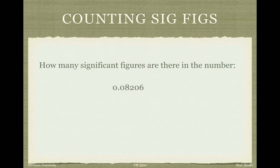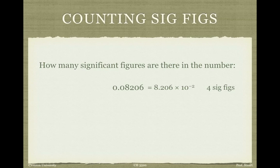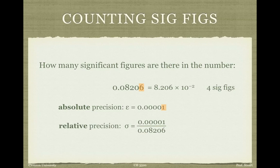A slightly trickier question: how many sig figs are in 0.08206? Here we can't just count all the digits — we have to count only the significant ones. The leading zeros after the decimal point are not significant; we count only the four digits 8206. This is more obvious if we write the number in scientific notation: 8.206 times 10 to the minus 2 has four sig figs. The leading zeros just tell us how many powers of 10 to include. The relative precision again comes out to roughly one part in 10 to the fourth.